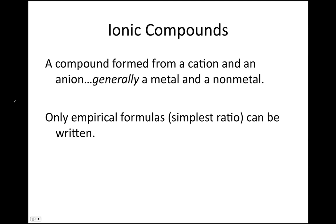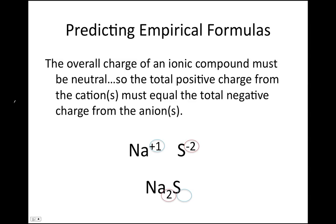For ionic compounds, only empirical formulas may be written. An empirical formula is a formula written in the simplest ratio of atoms. Generally, you can predict the empirical formula of an ionic compound because the overall charge of the compound must be neutral — the total positive charge from the cation must equal the total negative charge from the anion. So if the charges on the ions are known, or you can predict the charges by looking at the periodic table, you can predict the empirical formula.